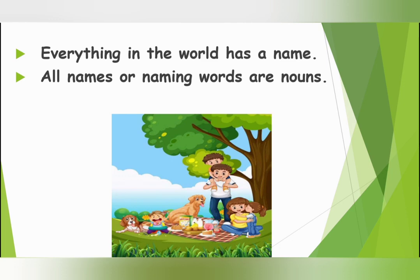Observe the picture carefully. There are a lot of things in this picture. This is a picnic point. There is a tree, dog, girl, boy, mother, father and many eatables. Everything in this picture has a name, and this name is called noun.